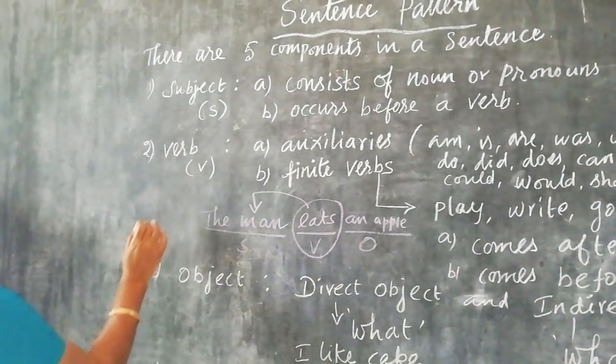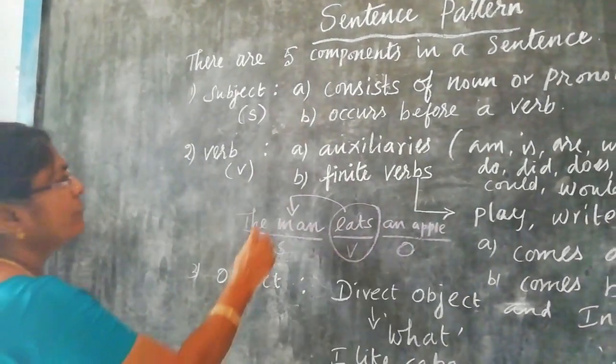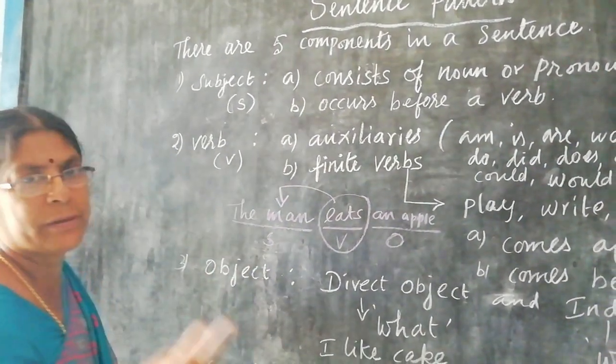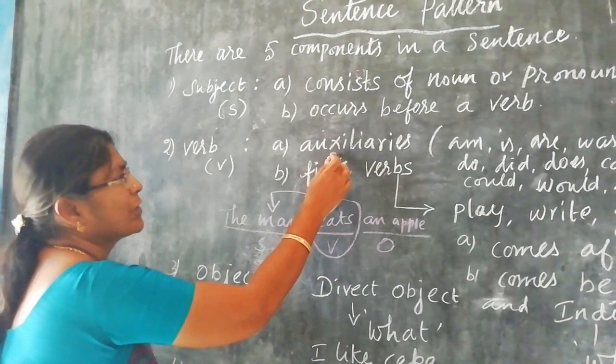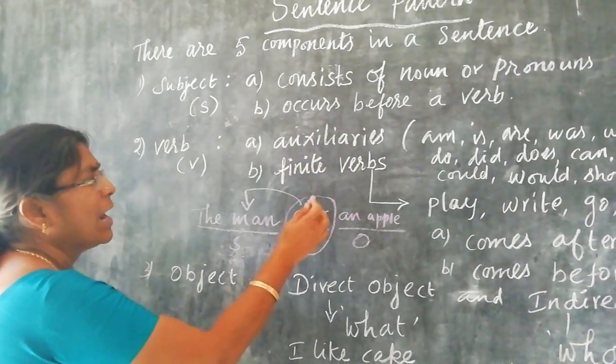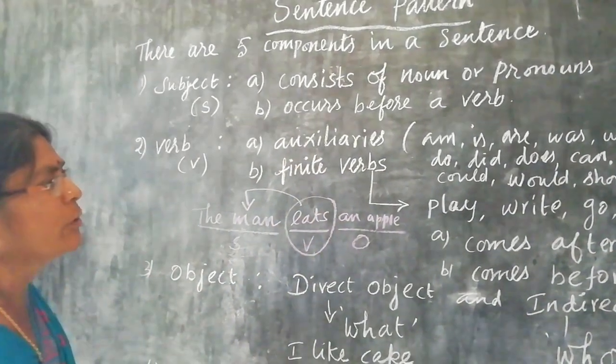The second component is the verb. When you talk about the verb, there are two types: one is the auxiliary verb, and another one is the finite verb.